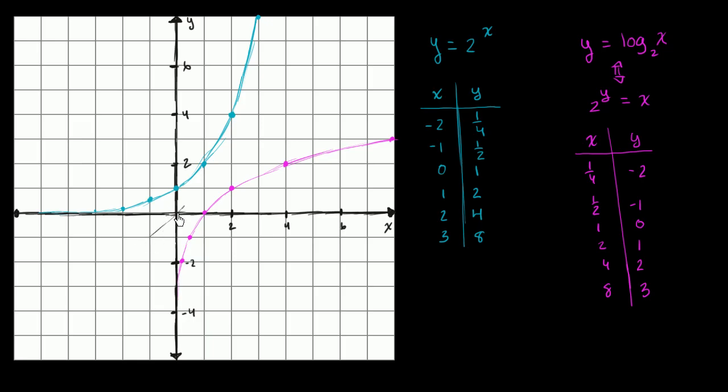So if you swap the x's and the y's, another way of thinking about it, if you swap the axis, you would get the other graph. Which is essentially what we're doing. Notice it's symmetric about that line. And that's because these are essentially the inverse functions of each other.